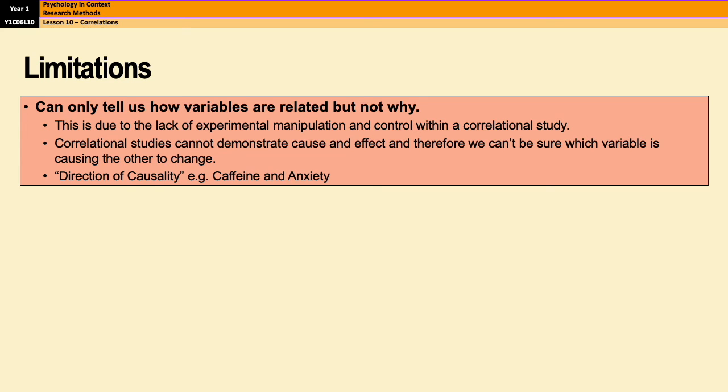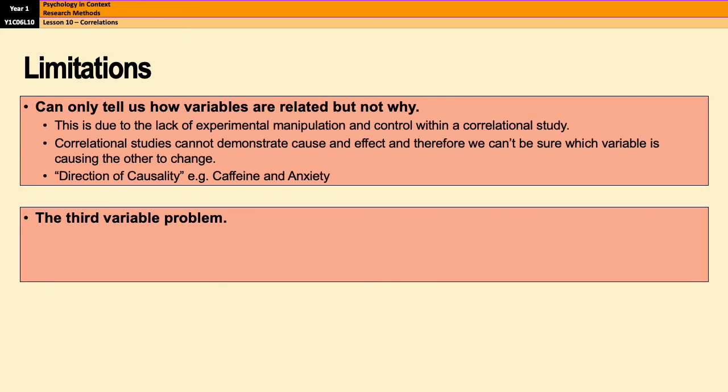So as an example, caffeine and anxiety are positively correlated. However, we don't know whether an increase in caffeine causes an increase in anxiety or whether it's the fact that already anxious people tend to drink more coffee. So we don't know which of the two it is. So we've got a problem with the direction of causality.